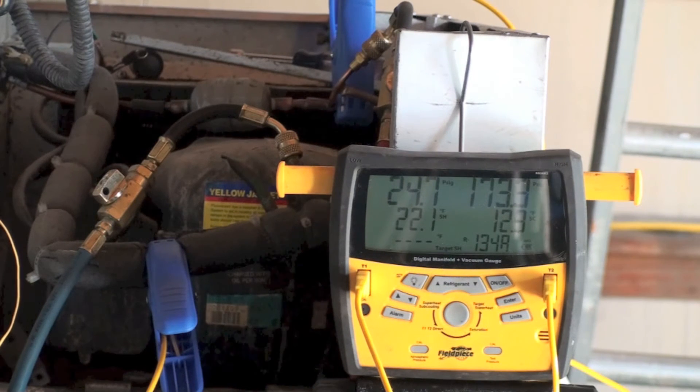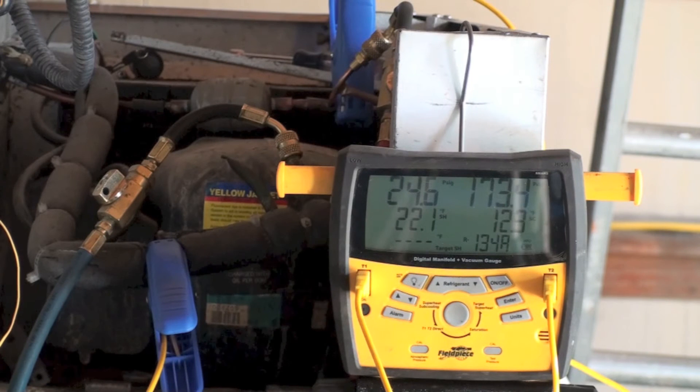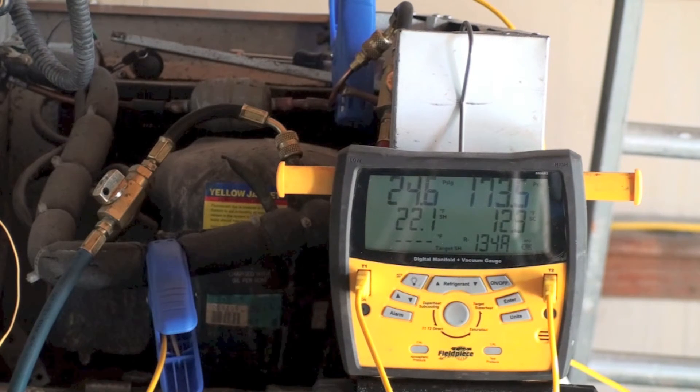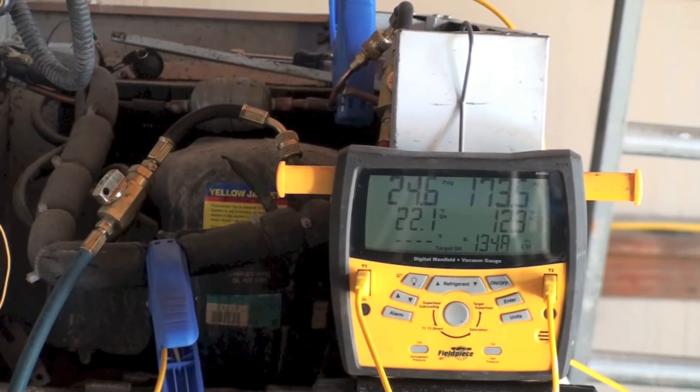On these small units like this, it's really important to take the temperature right where the bulb is. That's the only one that's going to give you any good sense on these things. If you're taking them here on the suction line,